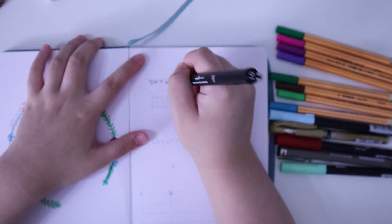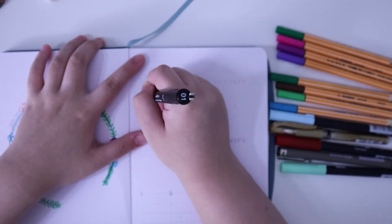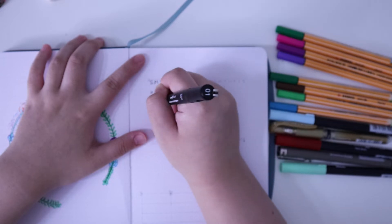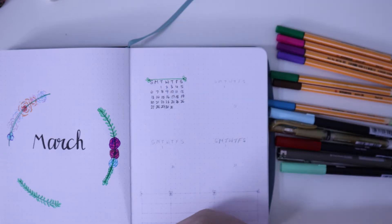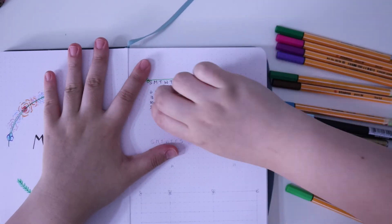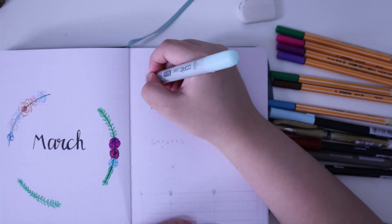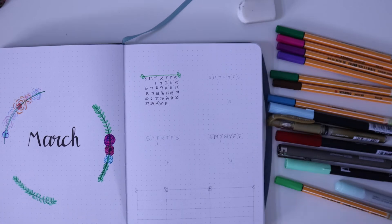Like I said, this video was very rushed so the cover page is literally just March with a little wreath around it. My trackers page is pretty much the same as my February setup, so if you want a more extensive explanation of how I set it up, then head over to my February bullet journal setup.